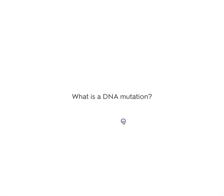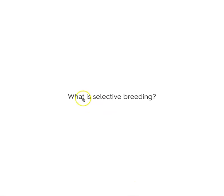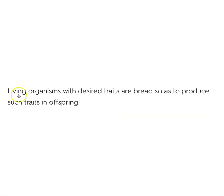What is a DNA mutation? A change in the DNA sequence. What is selective breeding? Living organisms with desired traits are bred so as to produce those traits in offspring. For example, if you want racehorses to have offspring with a high chance of being a fast racing horse, you breed for that specific trait and hope to have a horse that runs really fast.